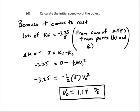This should be negative 3.25 here. So negative 3.25 equals kinetic final, which is zero. It came to a stop given minus 1 half mv initial squared. We know the mass, so the only unknown we have is v-naught or v-initial. So v-initial is 1.14 meters per second, and that wraps up problem number one.